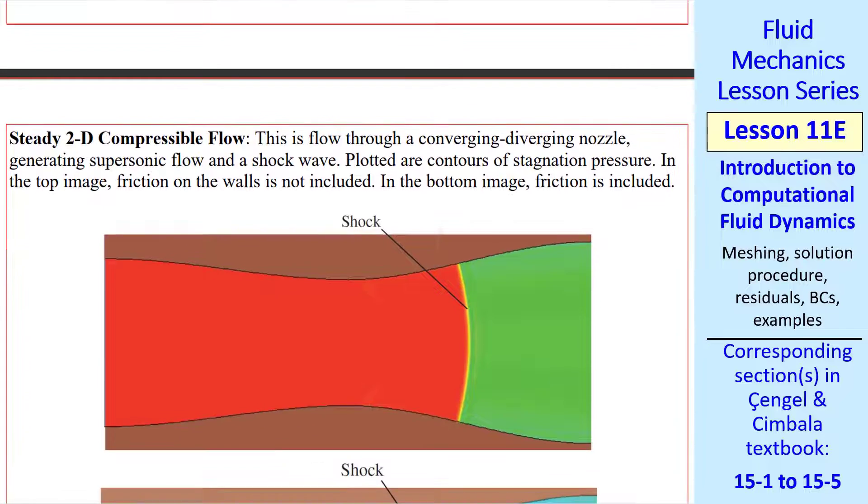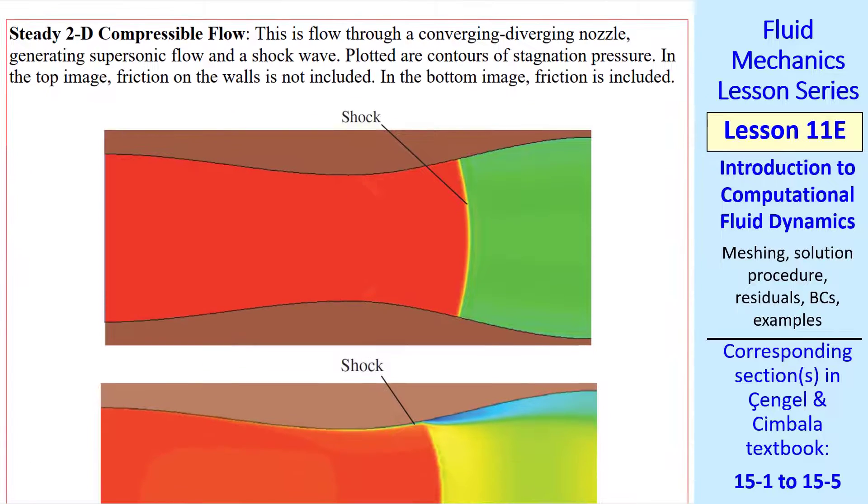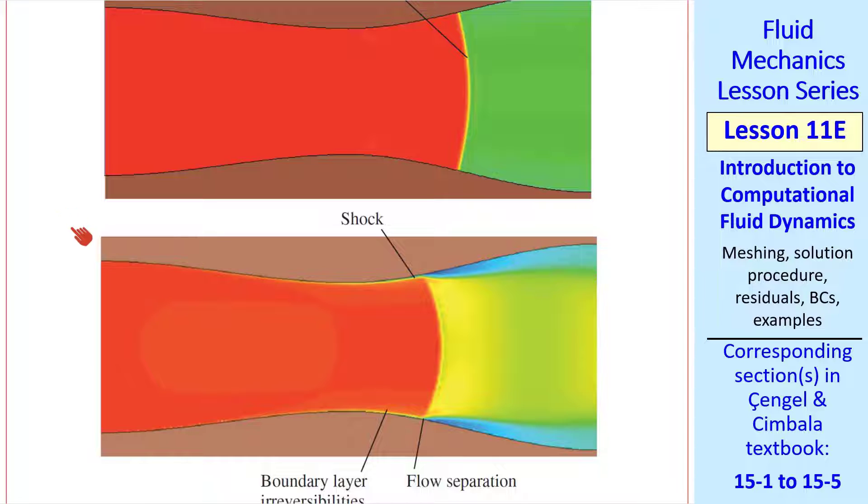I also did some steady 2D compressible flow problems. This is flow through a converging-diverging nozzle near the throat and there's a shock. The flow here is supersonic and here it's subsonic after the shock. In the top image, friction on the walls was not included and you can see that the flow is nice and clean. On the bottom picture, we included friction and you can see boundary layers forming which disrupts the shock shape and location. There's even some flow separation here that changes the whole pressure distribution downstream of the shock.